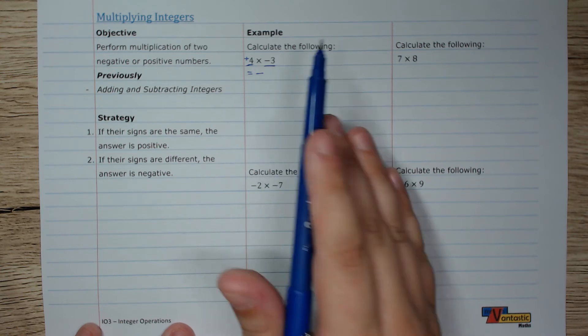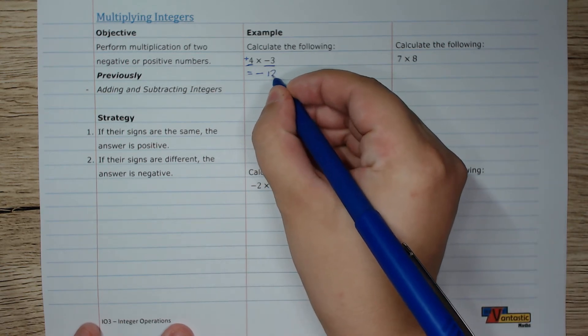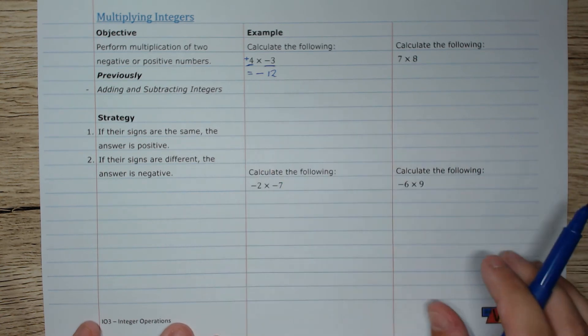4 times 3? That's right, it's 12. So 4 times negative 3 is negative 12.